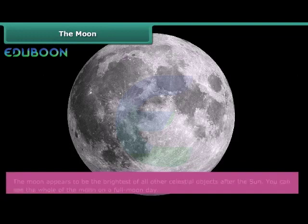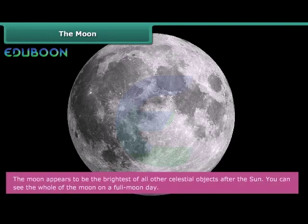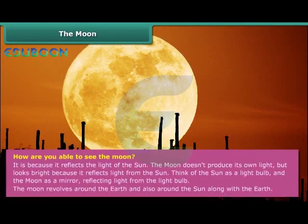The Moon. The Moon appears to be the brightest of all other celestial objects after the Sun. You can see the whole of the Moon on a full Moon day. How are you able to see the Moon? It is because it reflects the light of the Sun. The Moon does not produce its own light, but looks bright because it reflects the light from the Sun. Think of the Sun as a light bulb, and the Moon as a mirror, reflecting light from the light bulb.